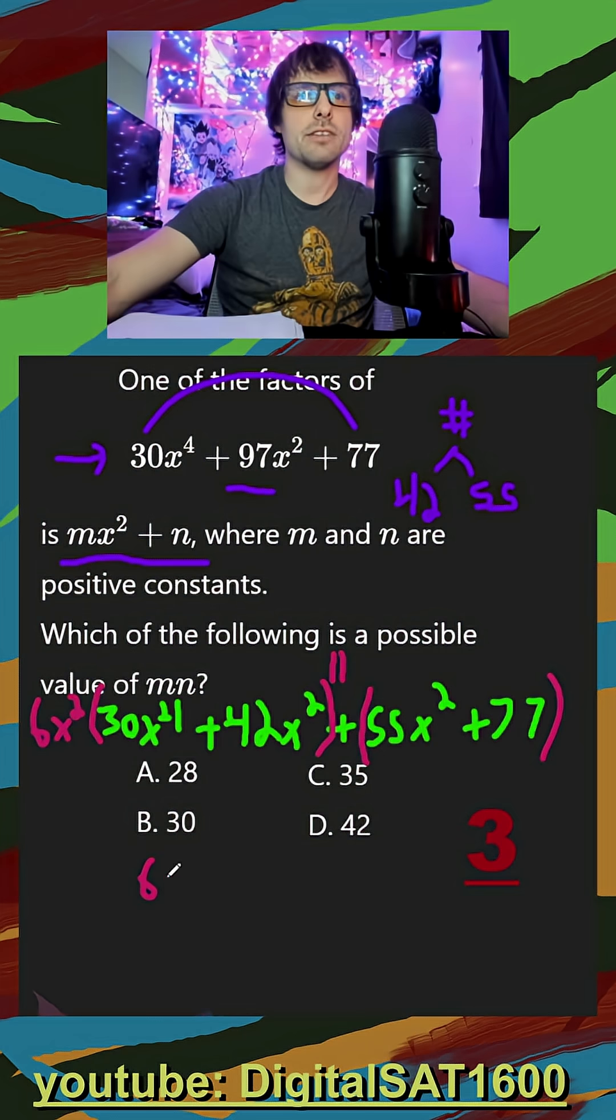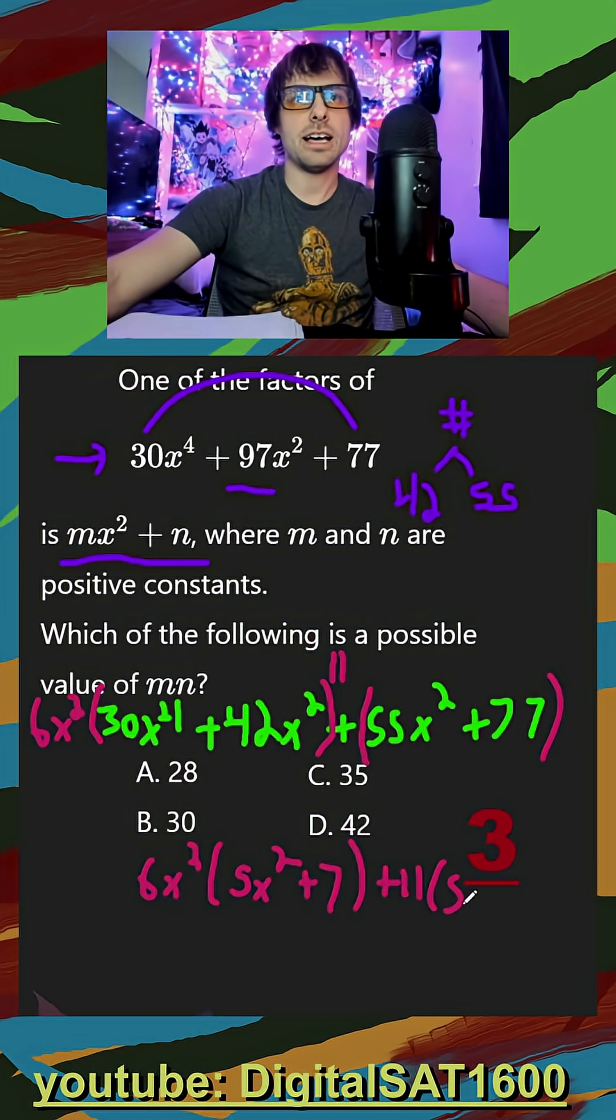And then down below, finally, we have 6x²(5x² + 7) and then plus 11 times, take 11 out of that, 5x² + 7.